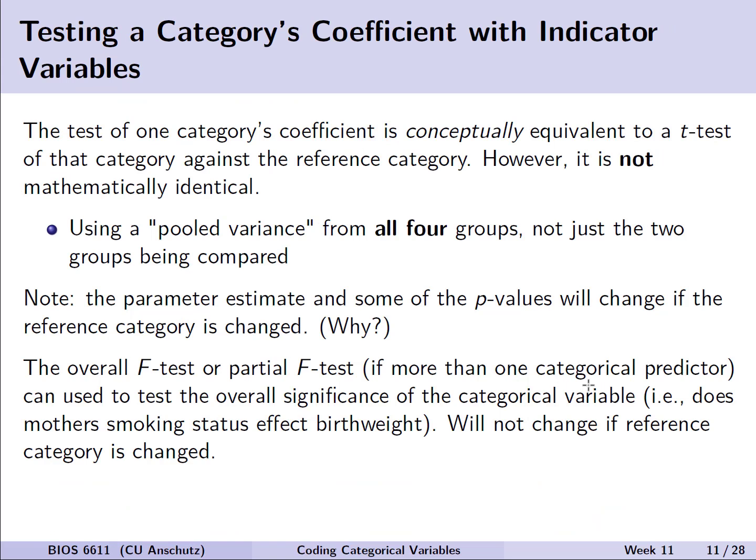We can also test a category's coefficient with these indicator variables. The test of one category's coefficient is conceptually equivalent to a t-test of that category against the reference category. However, it is not mathematically identical to subsetting the data to just two groups, because in our regression model we're using a pooled variance that involves information from all four groups. The parameter estimates and p-values will change if we change our reference category, because we're changing the perspective of what we're comparing groups to — whether we use non-smoker or heavy smoker as reference, those beta coefficients and p-values shift accordingly.